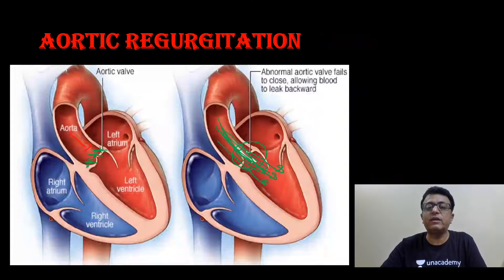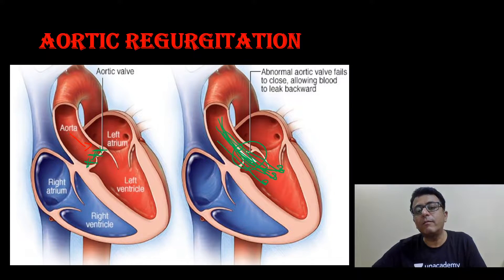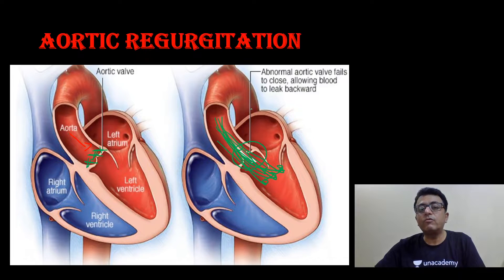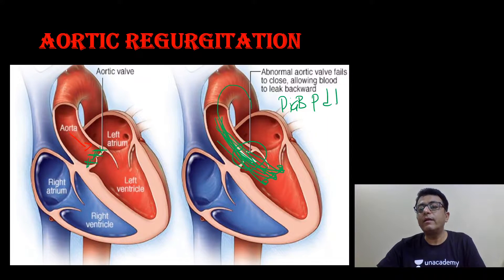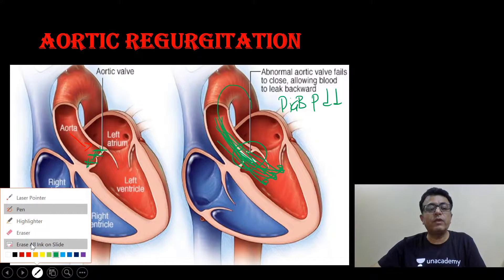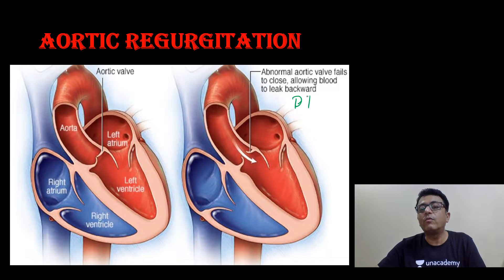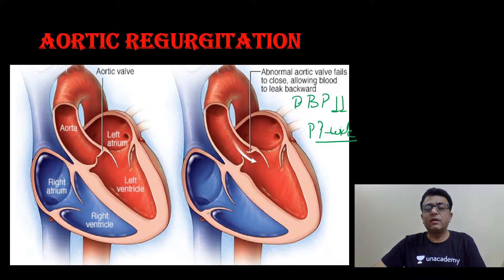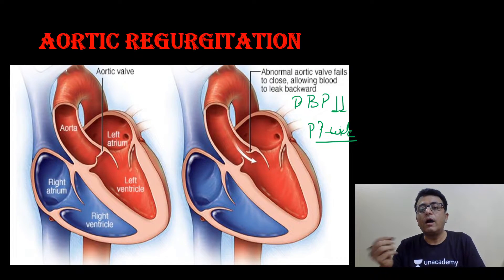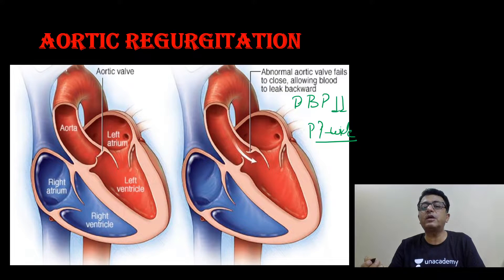In aortic regurgitation, blood comes back to the LV, so the amount of blood remaining in the arterial periphery decreases, and diastolic BP is low. When diastolic BP is low, pulse pressure will be wide. For example, if BP is 120/20, pulse pressure is 100; if BP is 120/40, pulse pressure is 80. So low diastolic BP widens the pulse pressure.